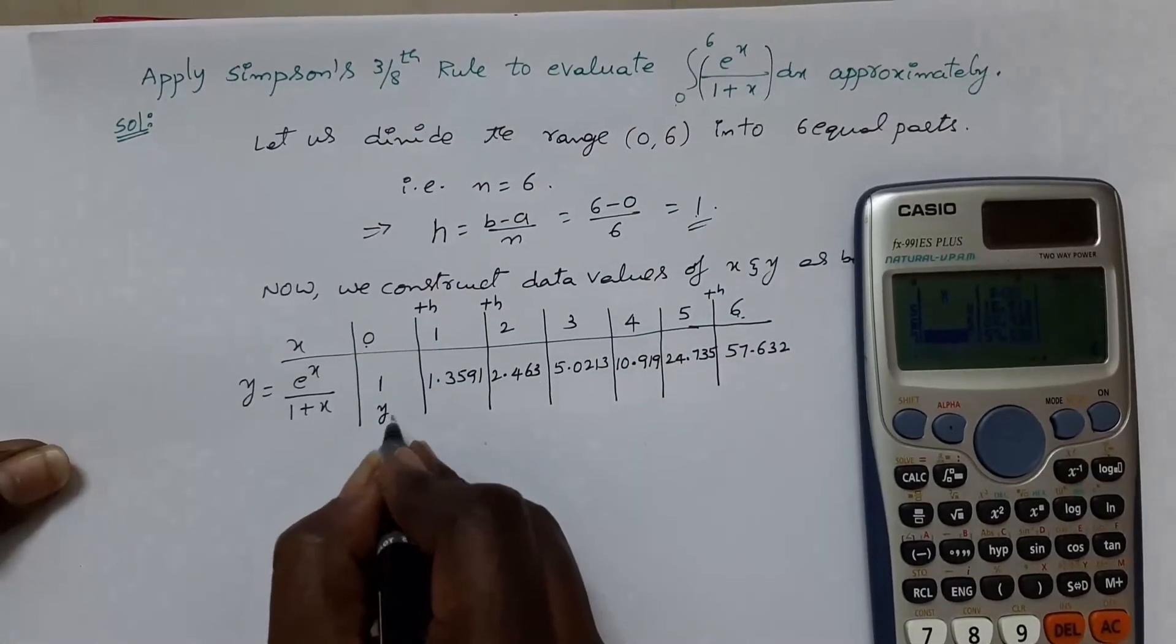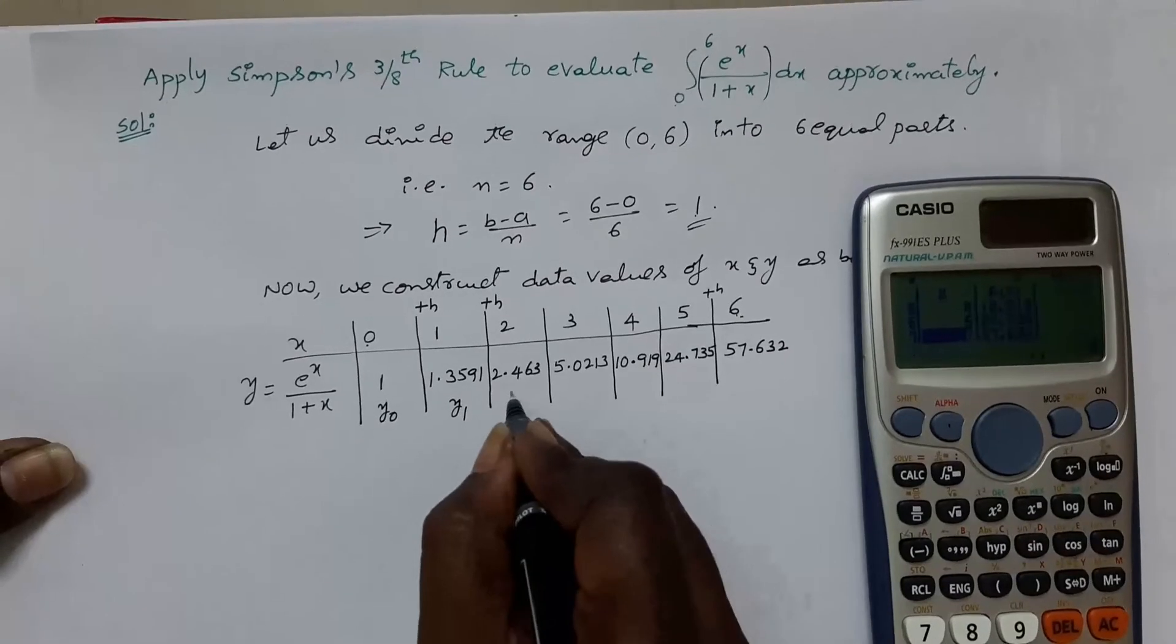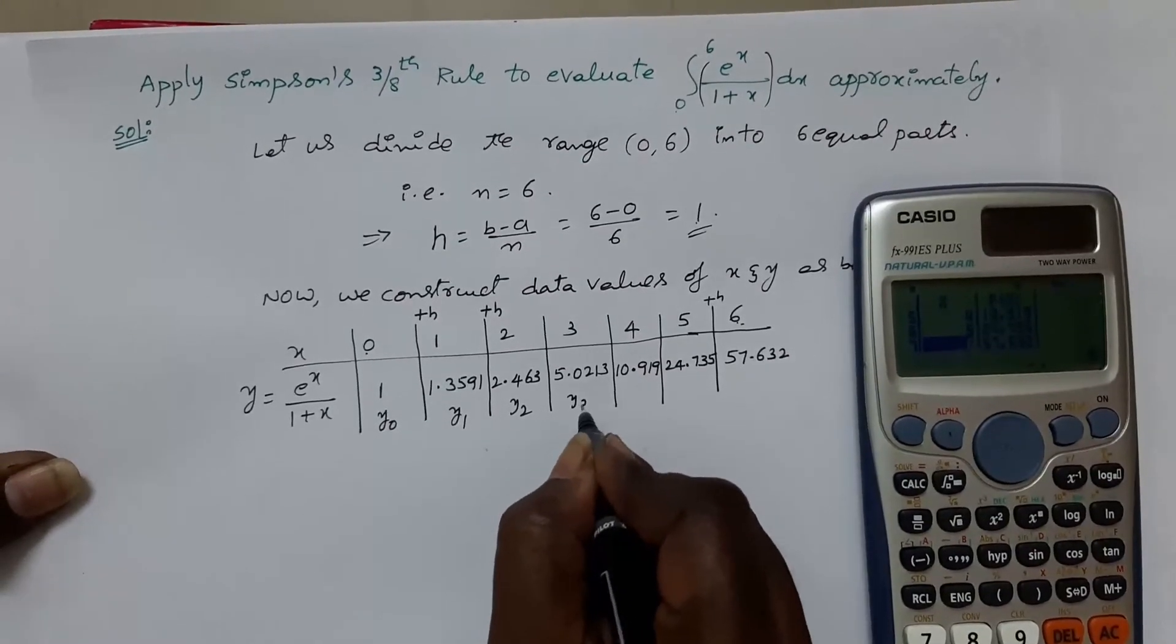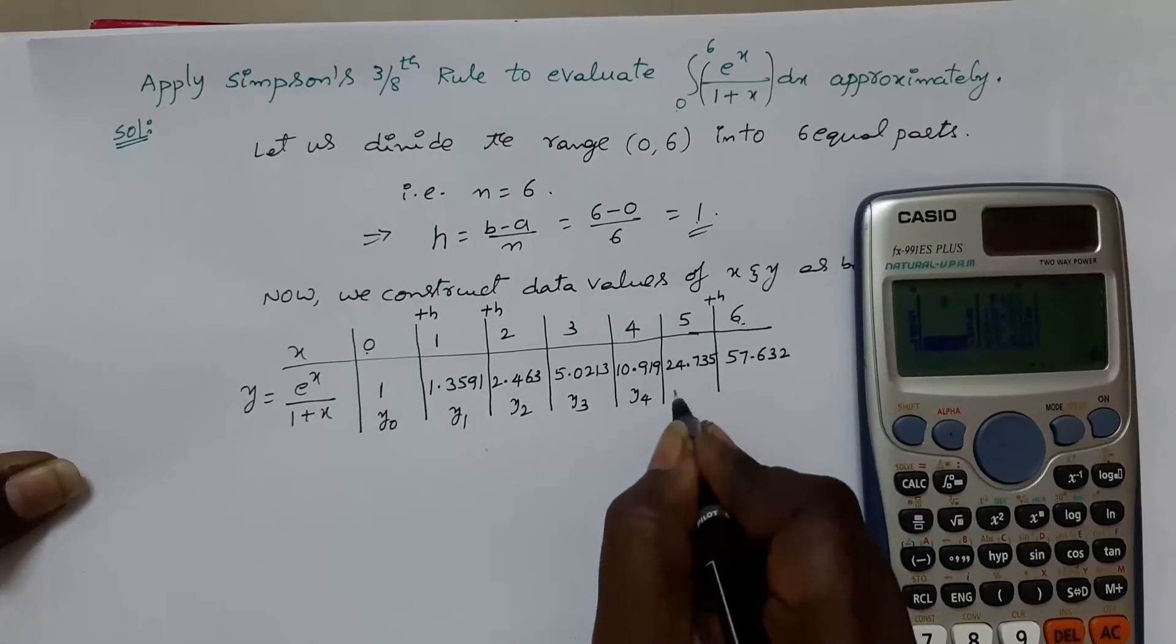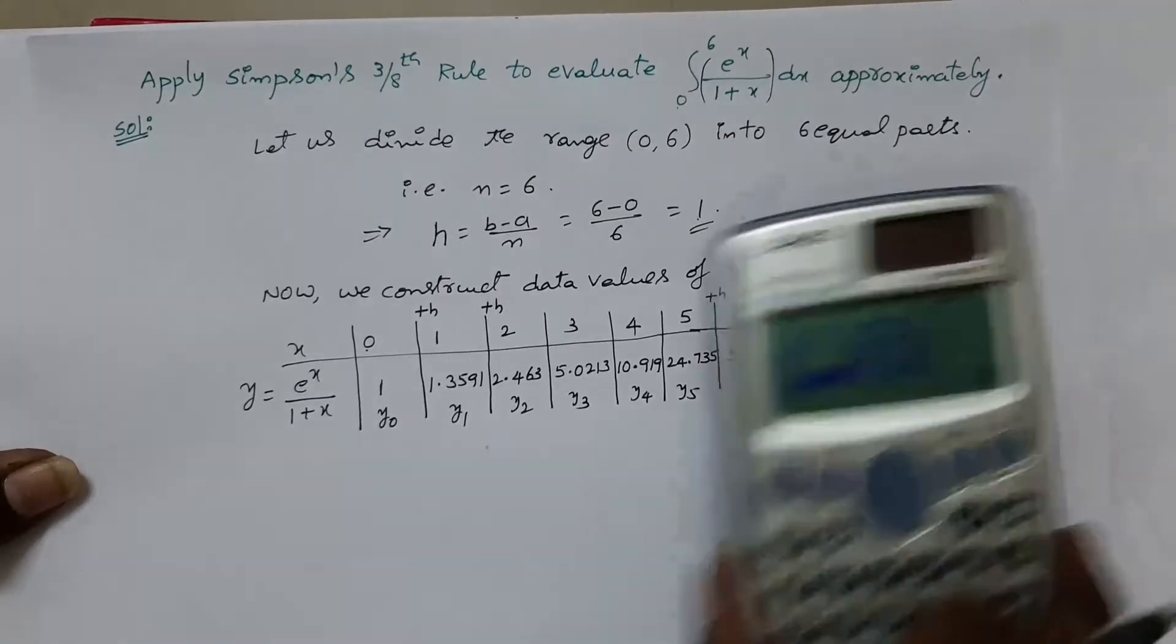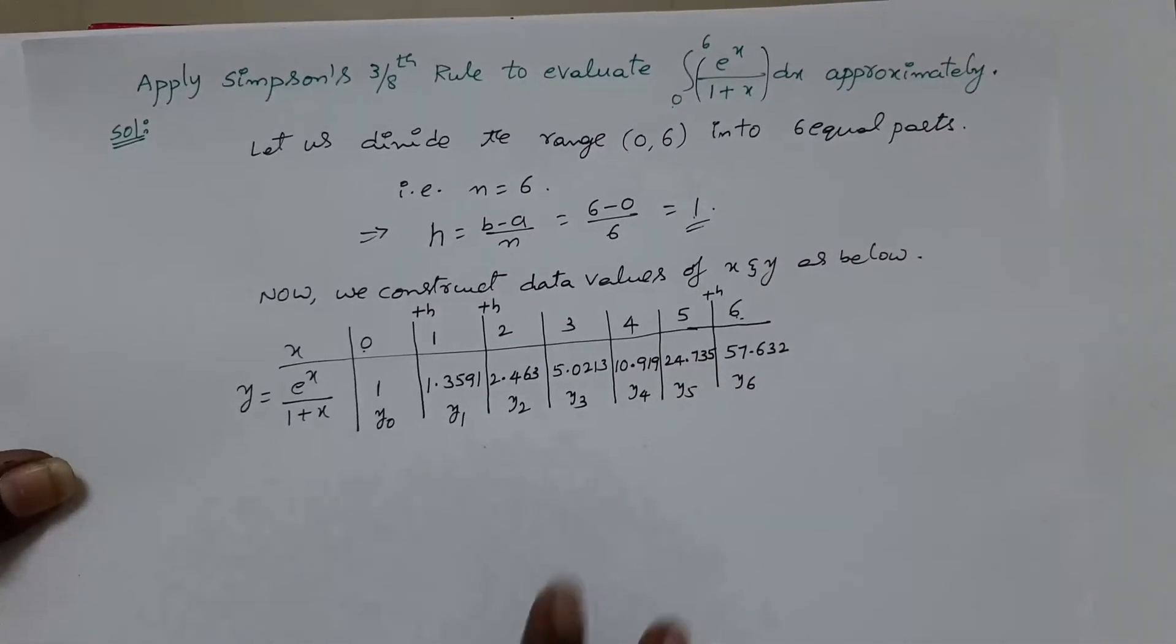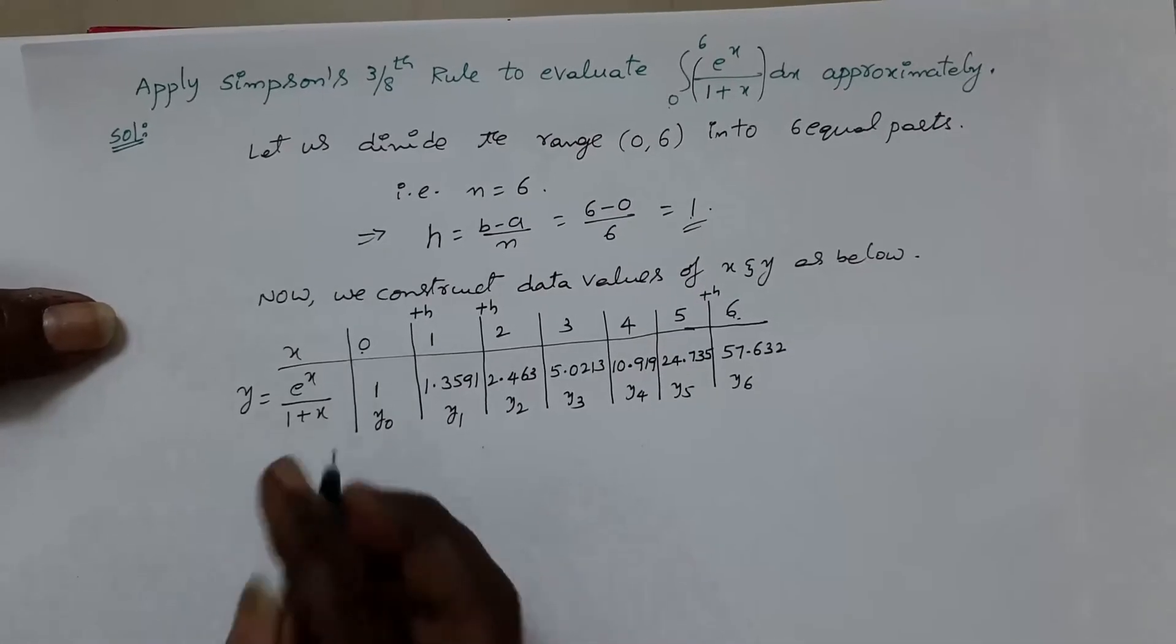So, put the names for y values. y0, y1, y2, y3, y4, y5, y6. Now, write the formula for Simpson's 3/8 rule.